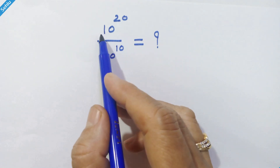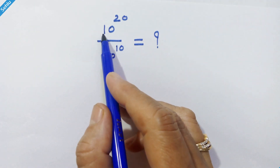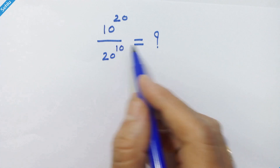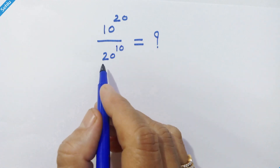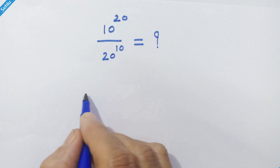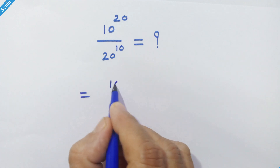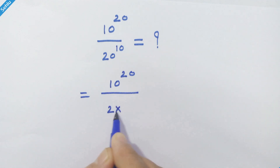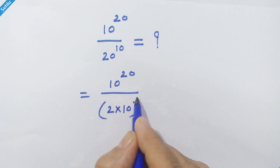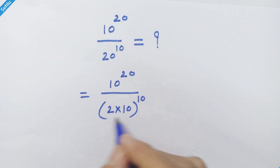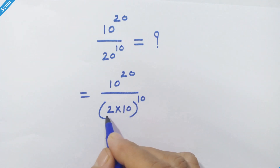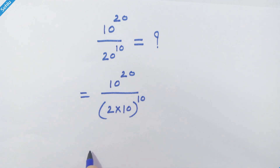Hello friends, we have this question which is 10 raise to 20 upon 20 raise to 10. Let's simplify this. We will rewrite the denominator as 2 into 10 whole raise to 10. If you open this bracket, the exponent will apply on both this 2 and this 10.